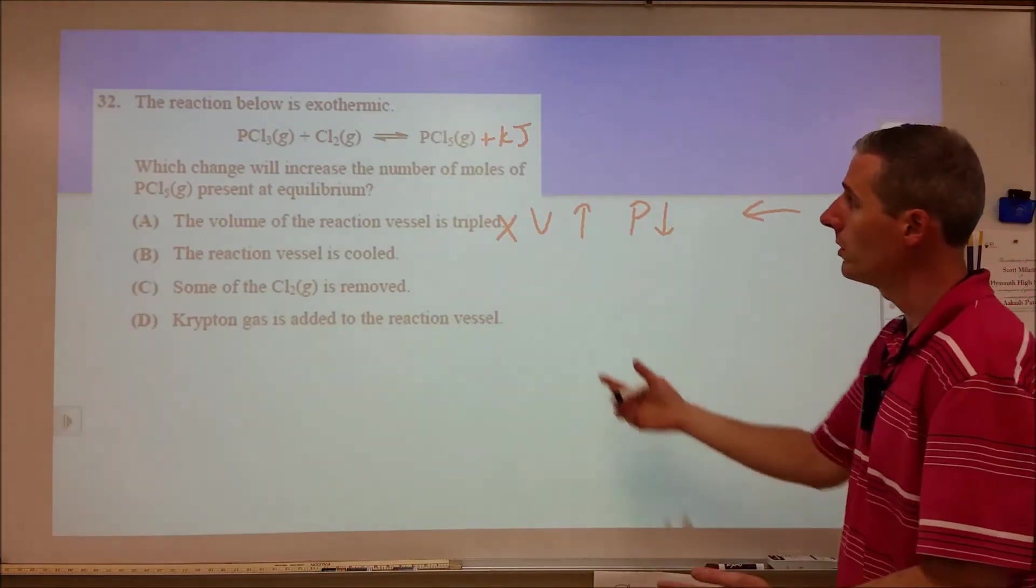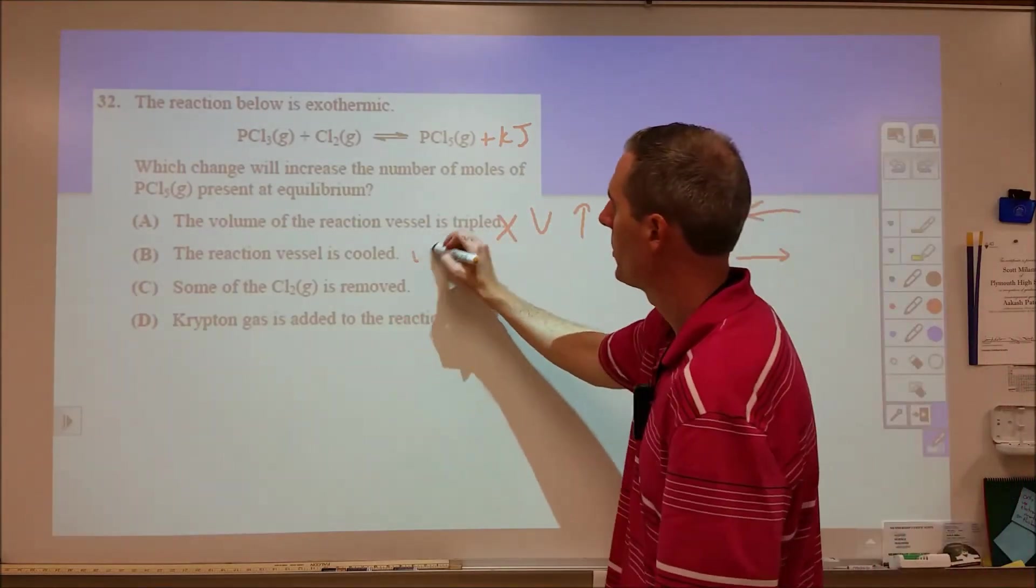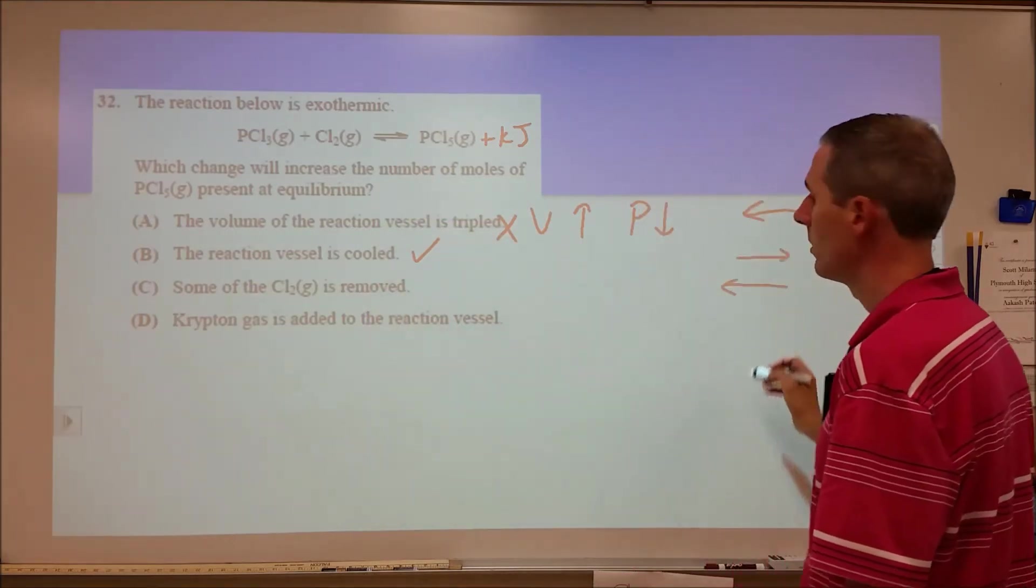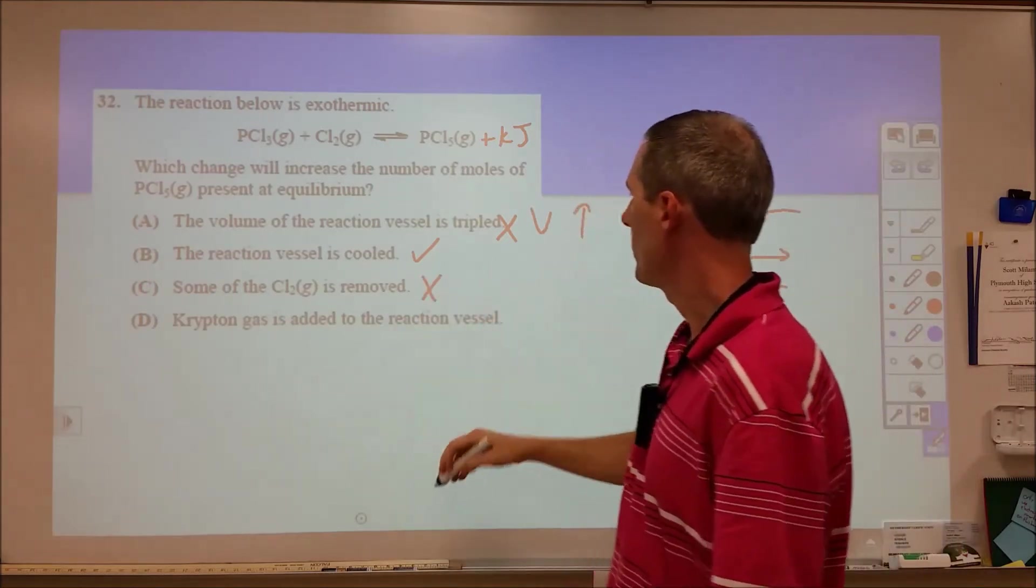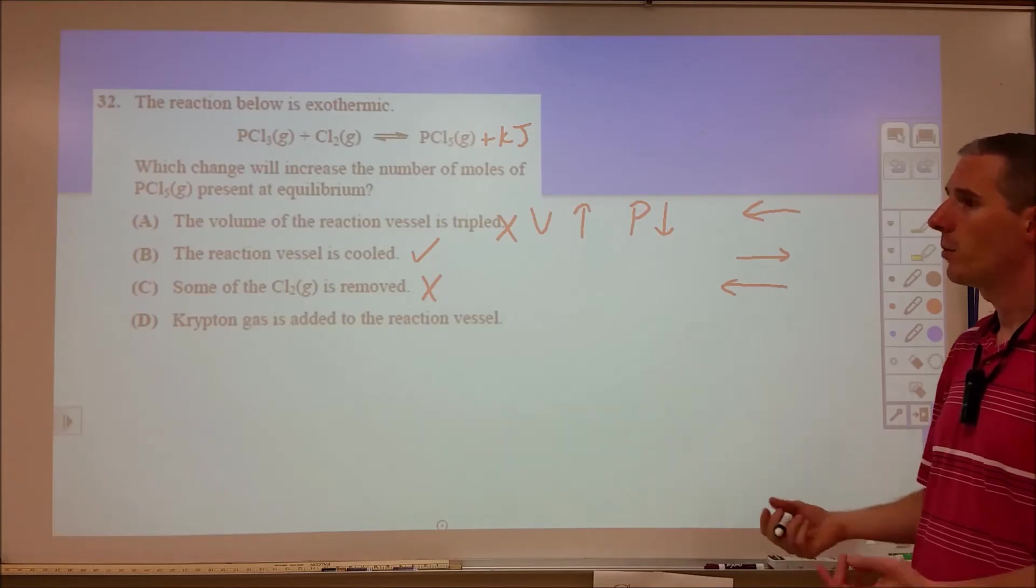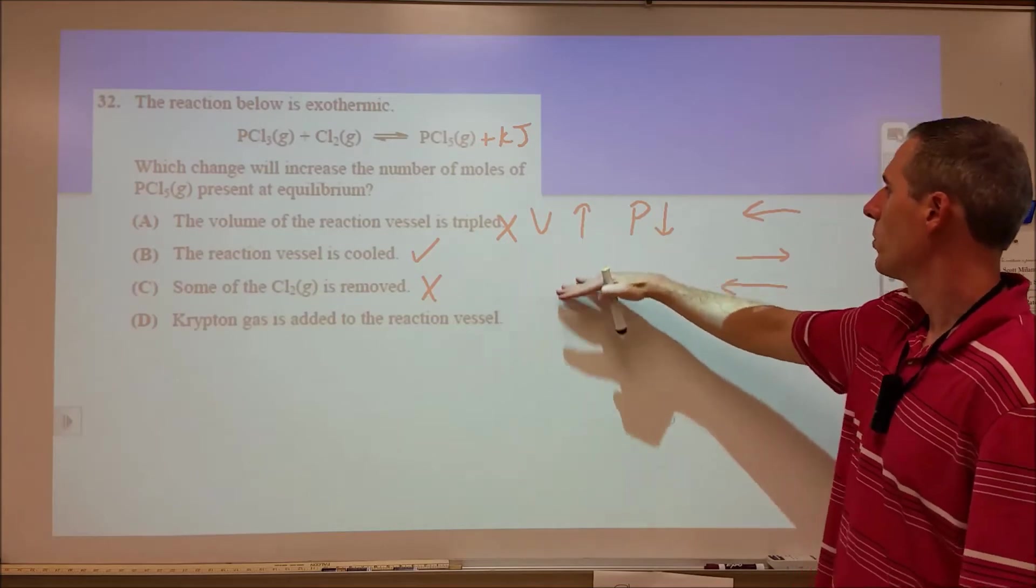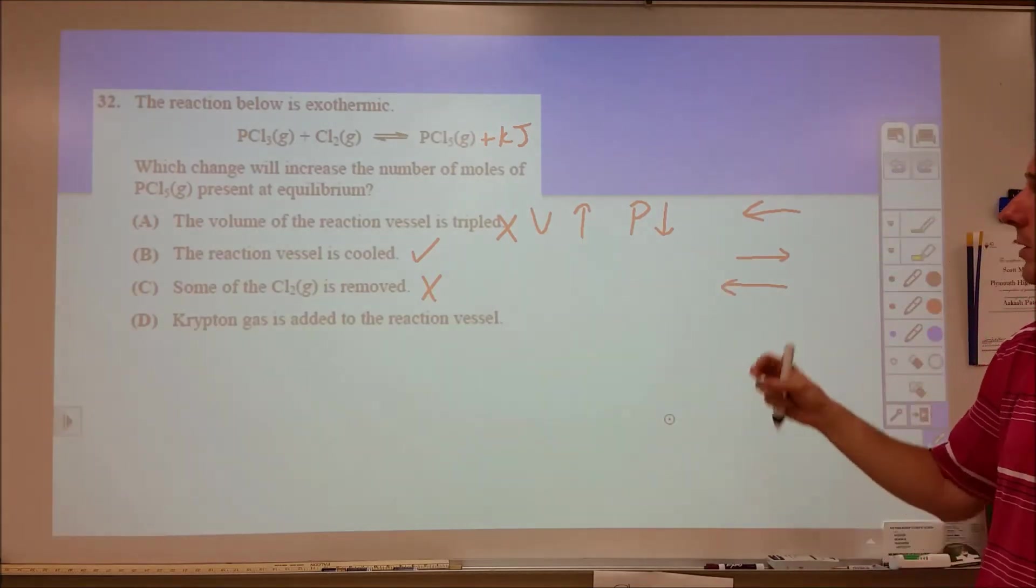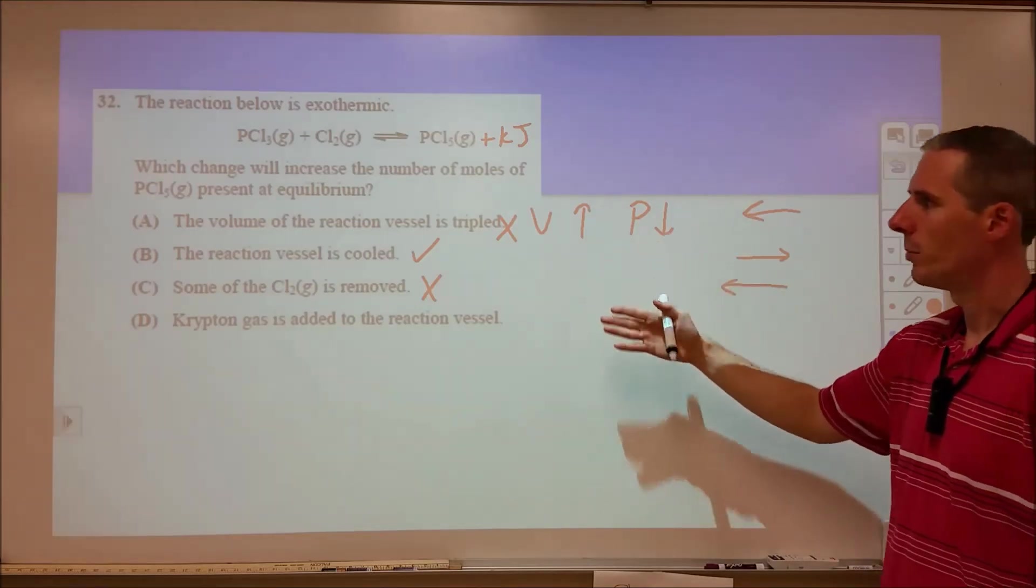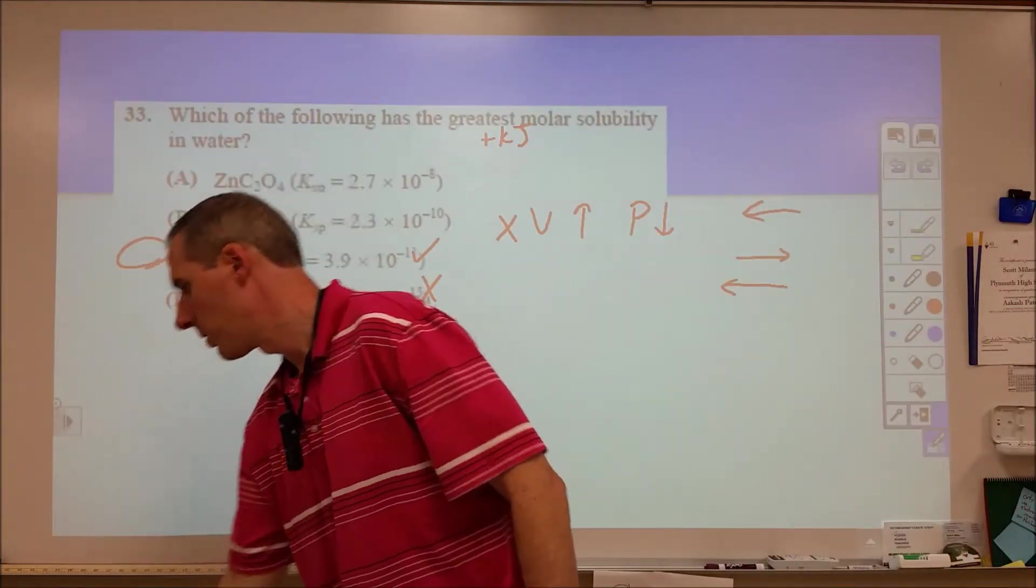The reaction vessel is cooled, we're decreasing this, we're going to shift to the right. That is going to increase our PCl5. So that should be our answer. If we remove Cl2, that's going to cause an increase to the left, so that won't increase our PCl5. And adding an inert gas does not change anything because you're not changing any of the reaction collisions. In reality, these changes are just where you're not at equilibrium because you're affecting the Q value, therefore affecting the rates. But Le Chatelier's is the easy way to come up with the fact that B is our correct choice.